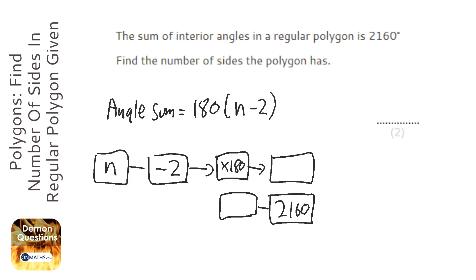So instead of multiplying by 180 we're going to divide by 180 and instead of doing it second we're going to do it first and then we're going to add 2.